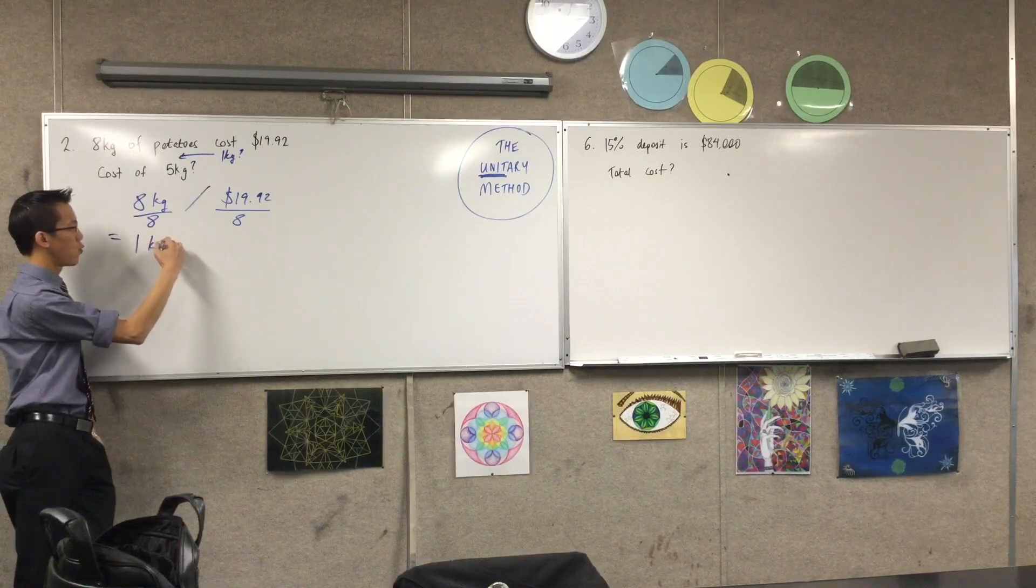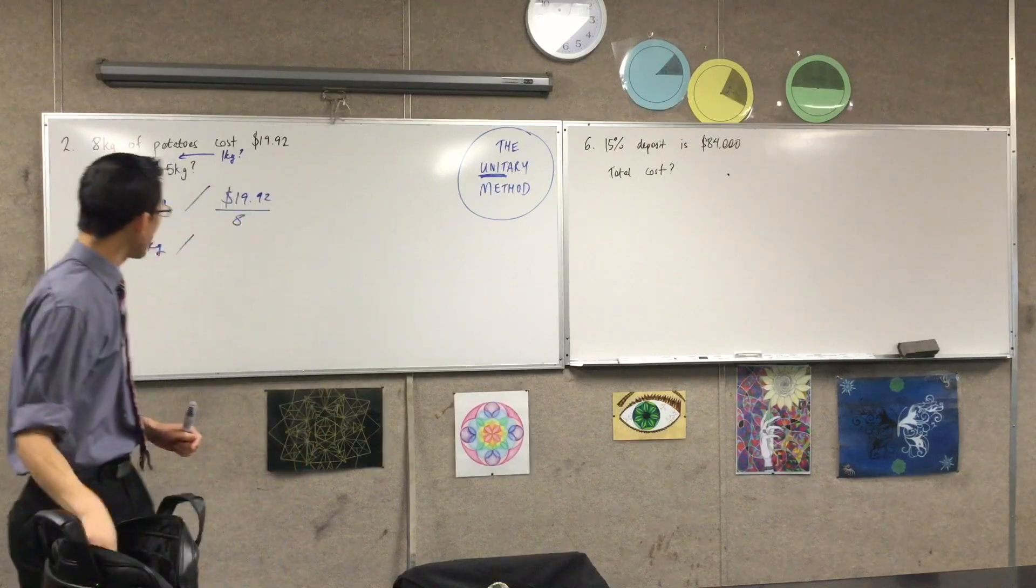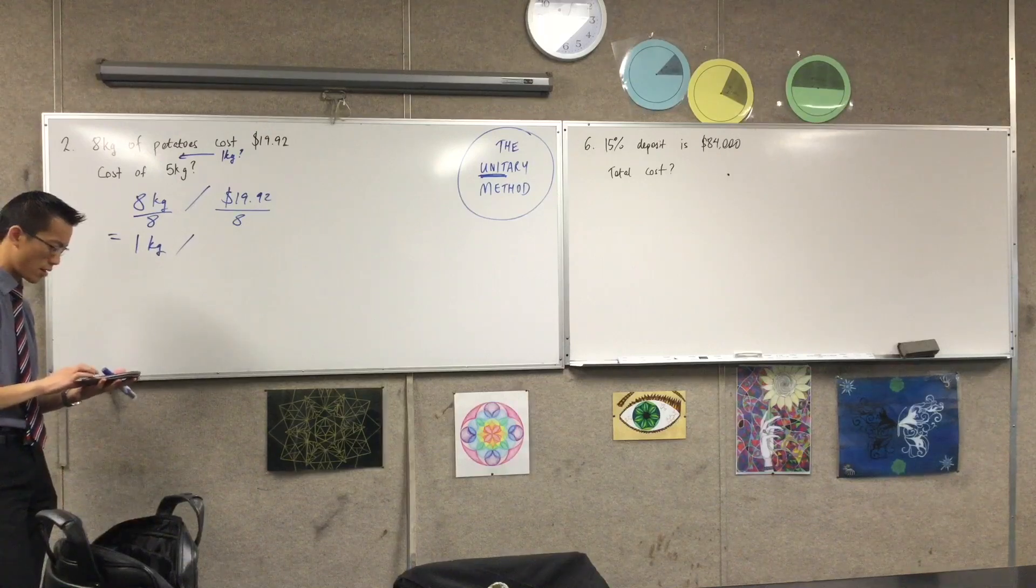and if you reach for your calculator, 19.92, that's going to be divisible by eight. Let's just confirm that.